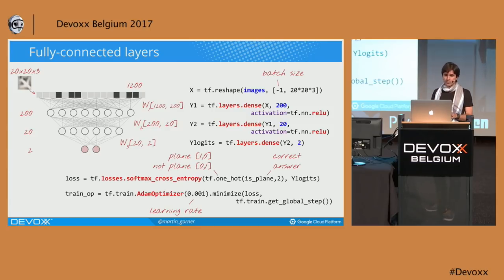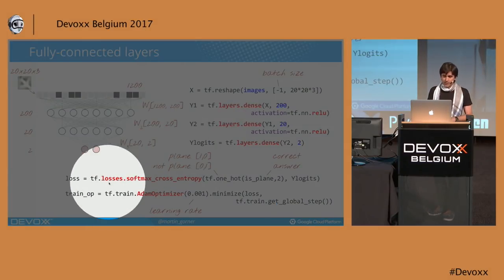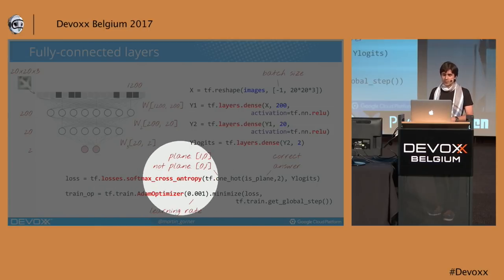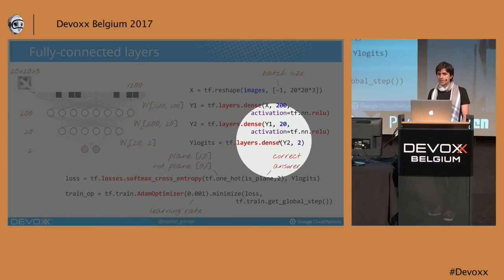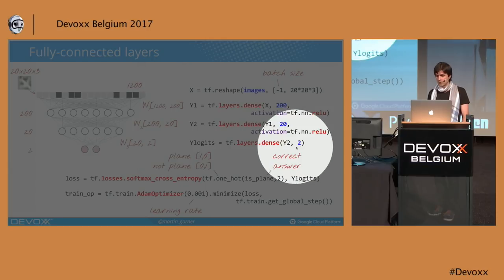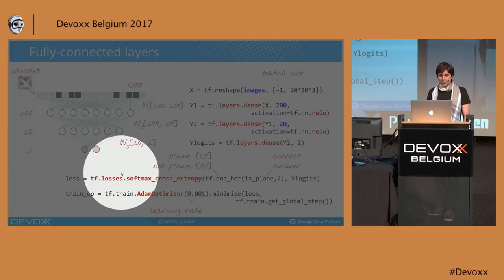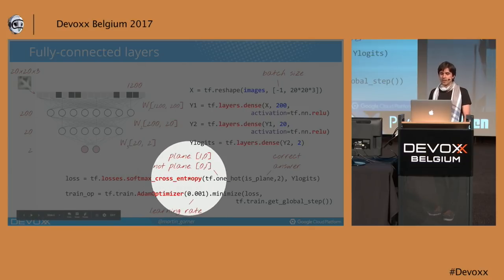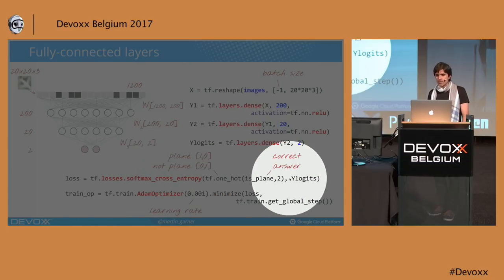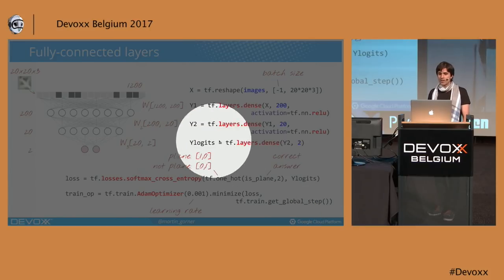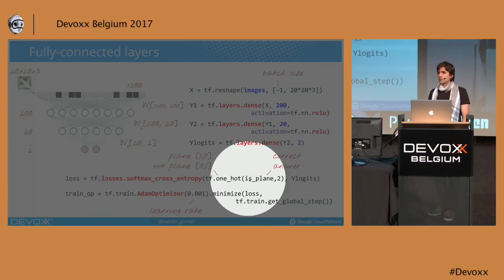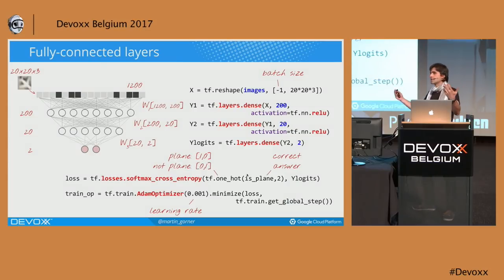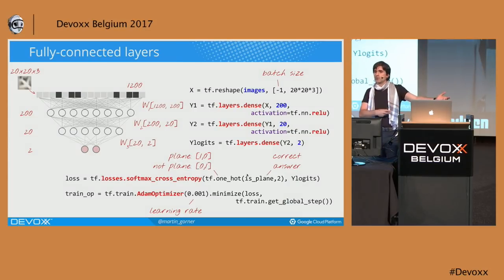In TensorFlow there is a function that does both softmax activation and cross-entropy distance together. You will notice the dense layer here does not have an activation function — I call this combined function instead, providing the output from the layer and the correct answer. This will compute the distance between what the network predicted and what I know to be the correct answer.